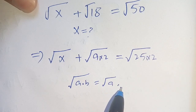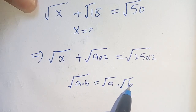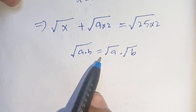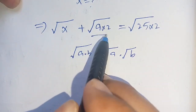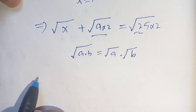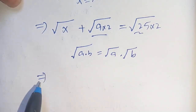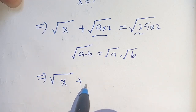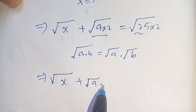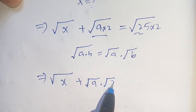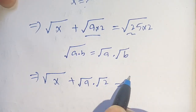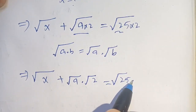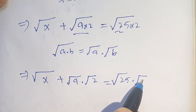We know that square root of a times b is equal to square root of a times square root of b. We use this identity in both terms and we get: square root of x plus square root of 9 times square root of 2 is equal to square root of 25 times square root of 2.